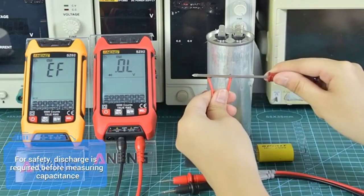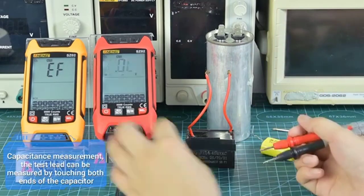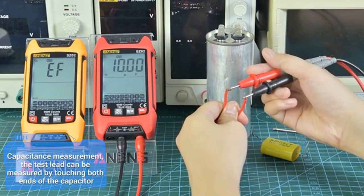For safety, discharge is required before measuring capacitance. For capacitance measurement, the test leads can be measured by touching both ends of the capacitor.